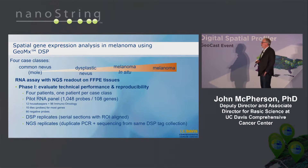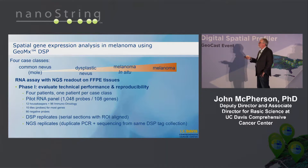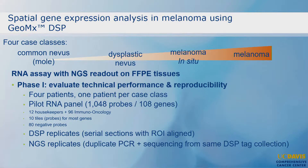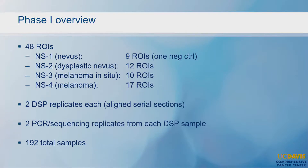Since this was a new platform we hadn't worked with, we were very interested in validation and how well it performs. We used four samples from four different patients: a common mole, a dysplastic nevus, a melanoma in situ, and melanoma. We looked at the early panel with 108 genes, many of them I.O. genes. We then examined replicates from serial sections — the same region of interest on adjacent sections — and also split the PCR step to make sure we'd get the same result. There were 48 regions Maya chose, one being a negative control completely off the tissue, resulting in 192 samples total.